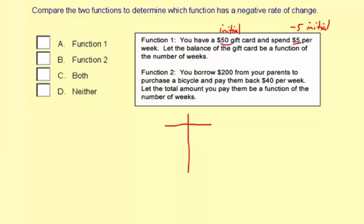You borrow $200 from your parents and you're going to pay them back. Let's say the input is the weeks and the output is the dollars. So for zero weeks, you pay them back $0, one week you pay them back $40, two weeks you pay them back $80, three weeks you pay them back $120, and so on and so forth.